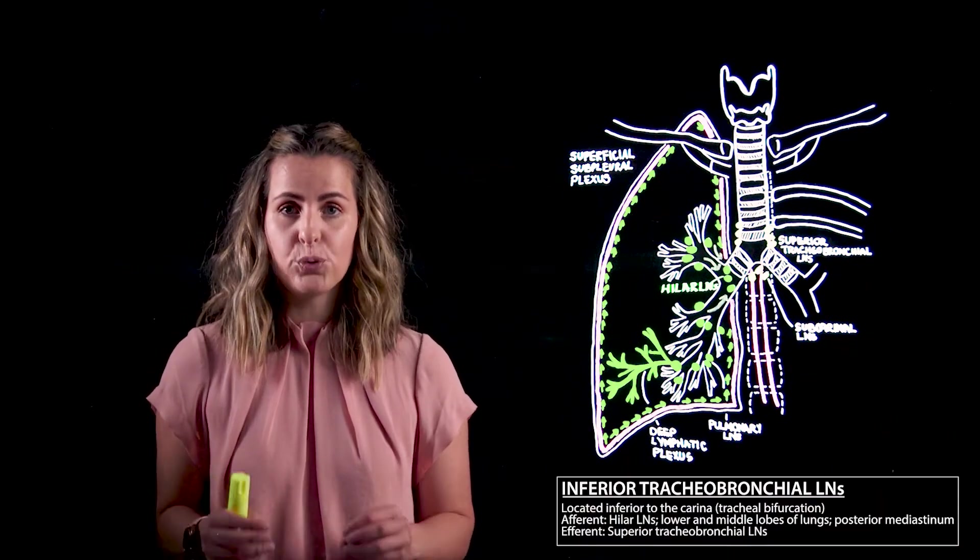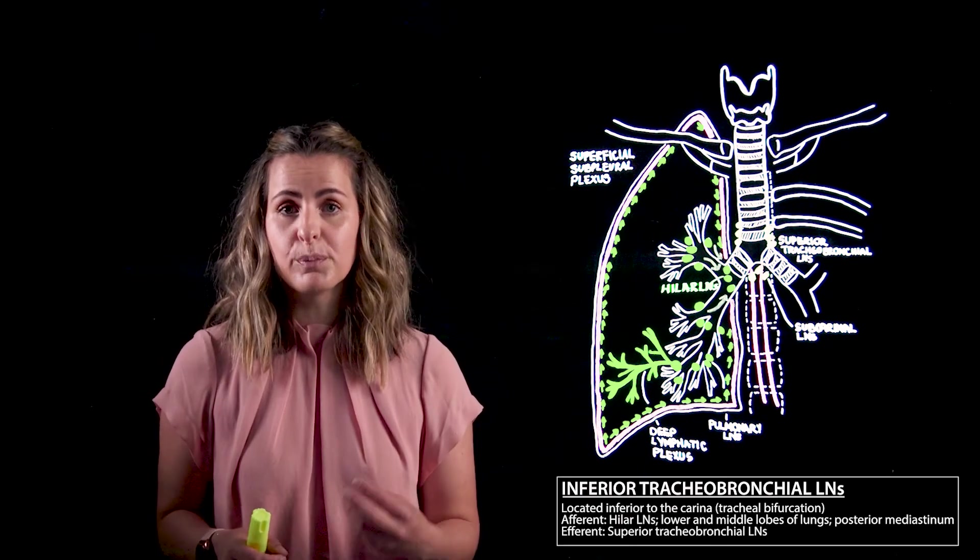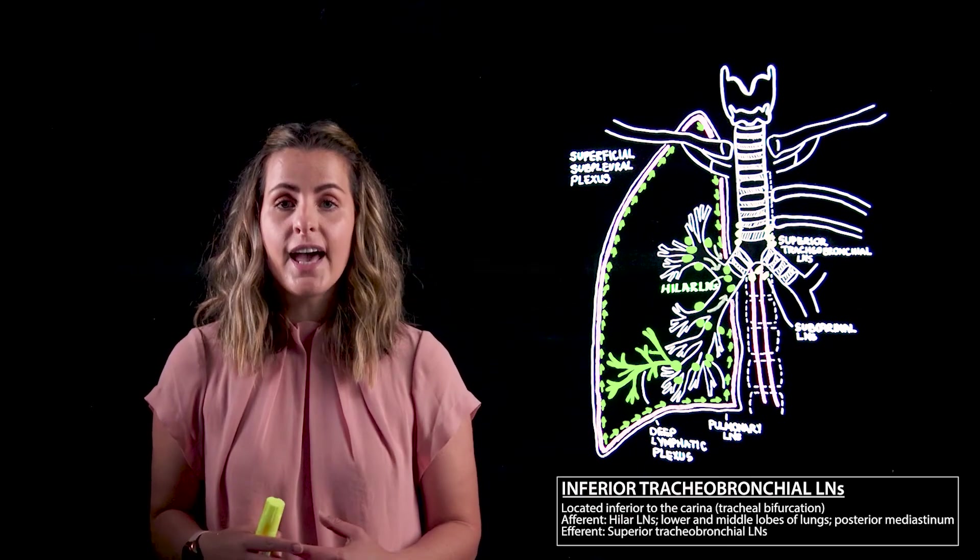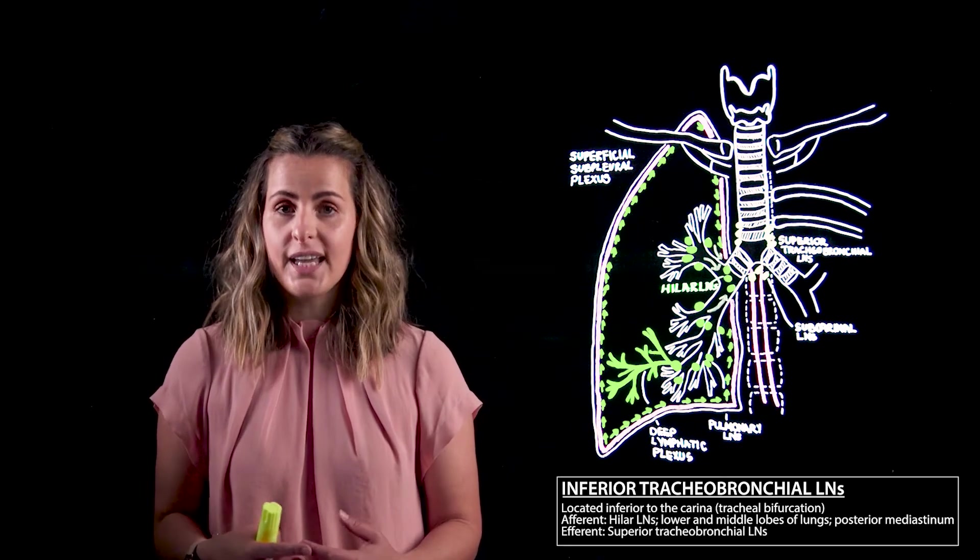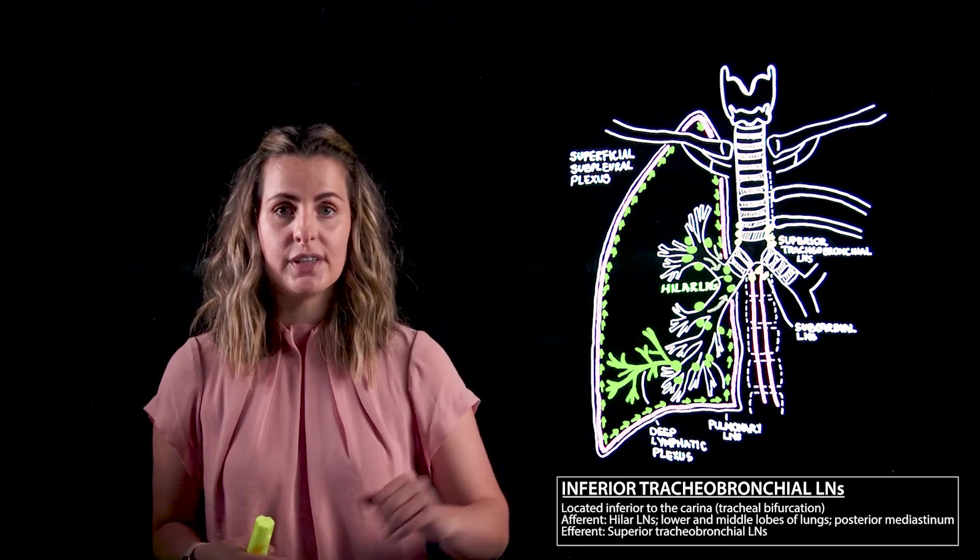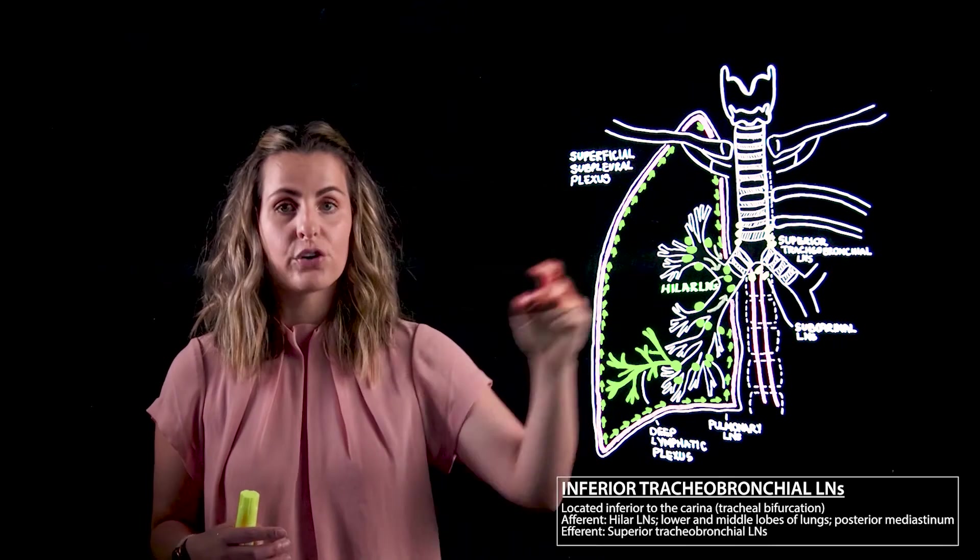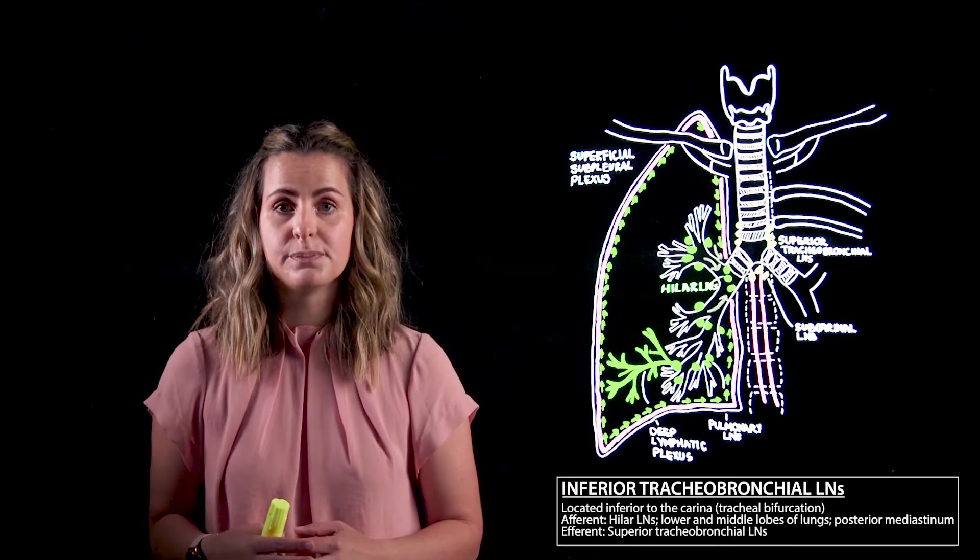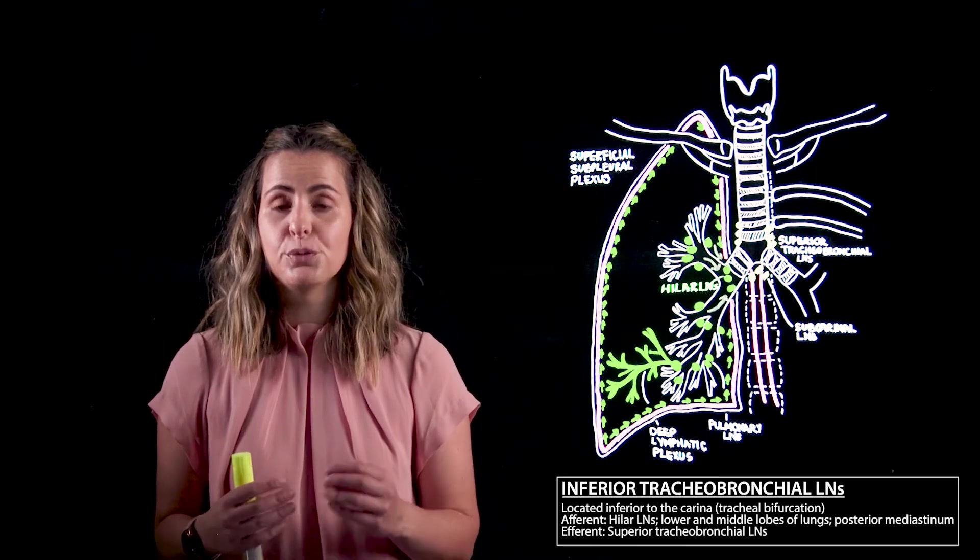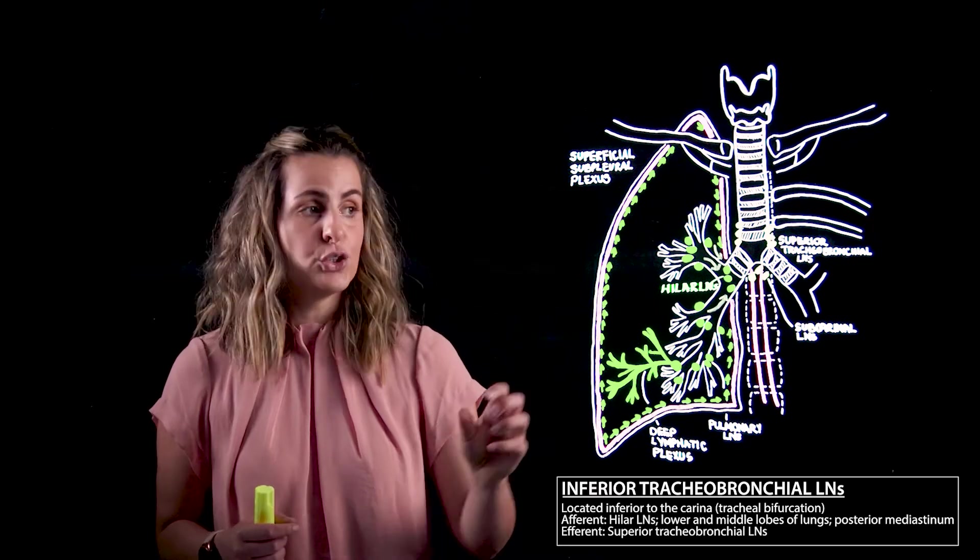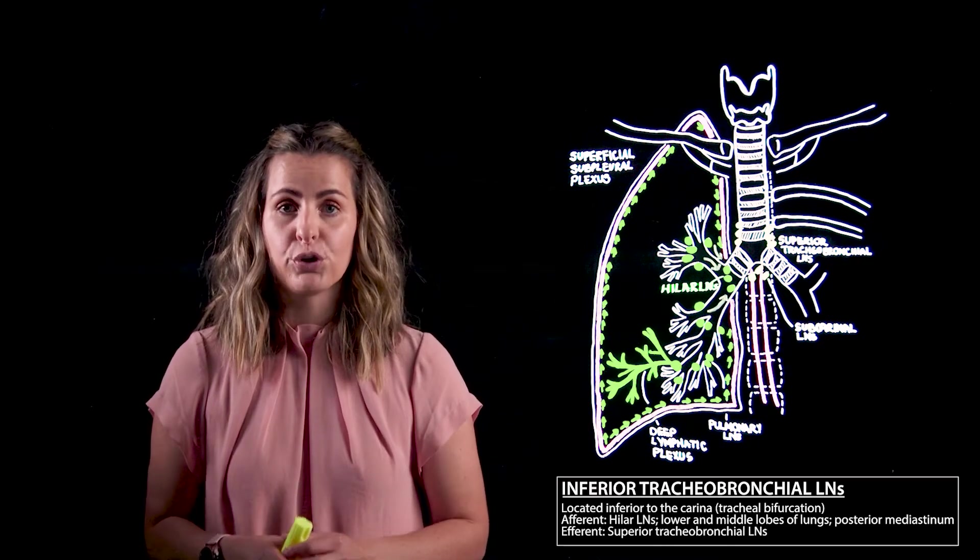The inferior tracheobronchial nodes will receive lymph from the lower lobes of the lungs as well as the middle and posterior mediastinum. These are located inferior to the carina and will send lymph to the superior tracheobronchial nodes. There is a tendency for vessels from the upper lobes to pass their lymph directly to these superior tracheobronchial nodes.